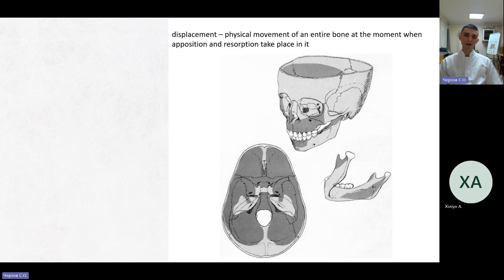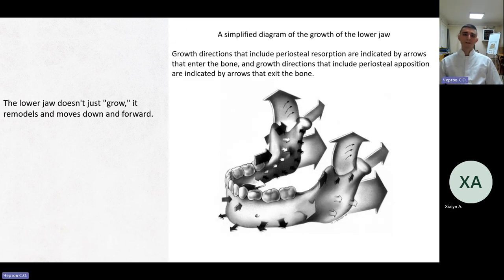On this picture you can see the fields of resorption, shown in black color — we call them the negative fields. If you apply a force on these fields, the bone will resorb. The fields of apposition are white. Here you can see a simplified diagram of the growth of the lower jaw. Growth directions that include periosteal resorption are indicated by arrows entering the bone, and those including periosteal apposition by arrows exiting the bone.